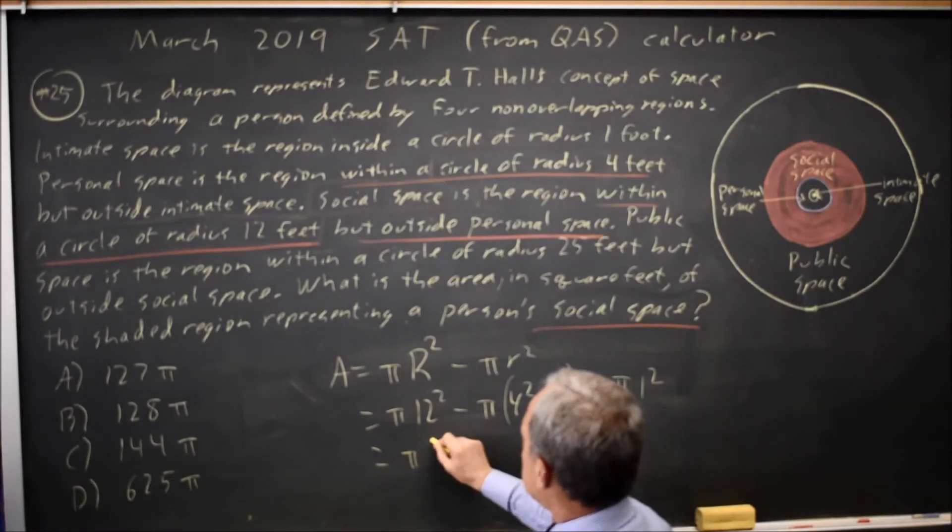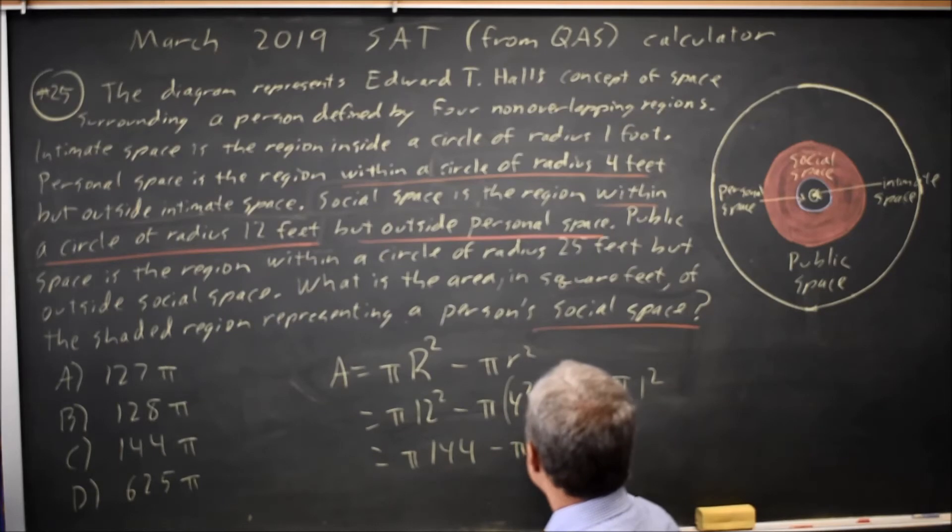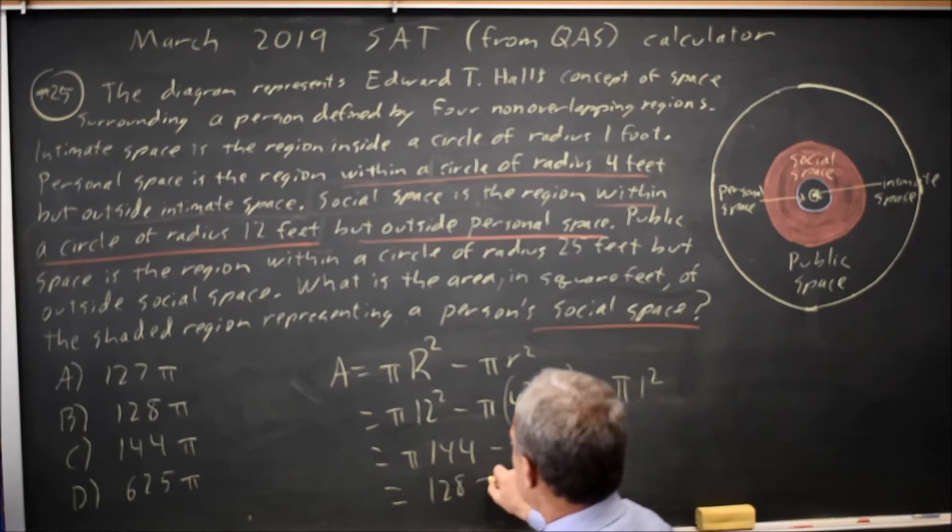So this is pi times 12 squared is 144, minus pi times 16 minus 1 is 15, minus 1 more pi is 128 pi.